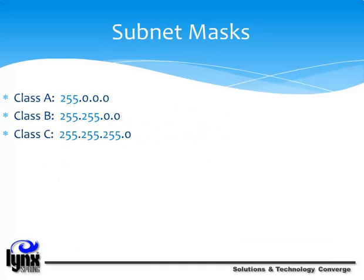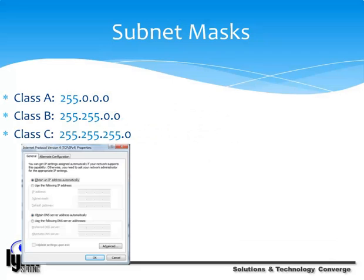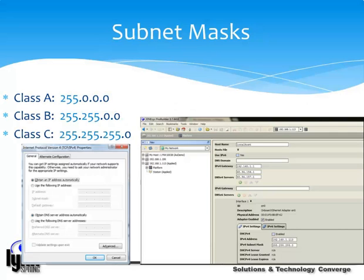Each device that is network-aware will have some kind of configuration screen somewhere that allows you to set its IP address and the rest of its network settings. For example, on the left is an example of a Windows 7-based computer, and on the right is a LinkSpring Genesis Building Automation Controller.